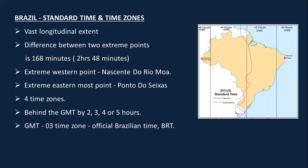For Brazil's communication: telecommunication is very well developed and efficient. Brazil has started developing technology to send domestically made satellites into space; their Brazilian Space Agency (AEB) looks after the space launching programs. Brazil has four time zones because of its vast longitudinal extent — the difference between its two extreme points is 168 minutes (two hours 48 minutes). The extreme western point and extreme eastern point is Ponta de Seixas — important for map marking.